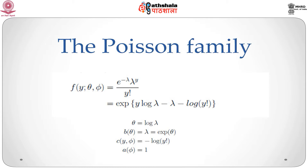The Poisson family is another common example of the one-parameter exponential family. The mass function is f(y; theta, phi) = e^(-lambda) * lambda^y / y!, which equals exponential of y*log(lambda) minus lambda minus log(y!). The canonical parameter is theta = log(lambda). The function b(theta) = e^theta, and c(y, phi) = -log(y!). As with the binomial, there is no additional scale parameter and a(phi) = 1.